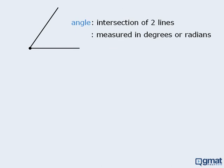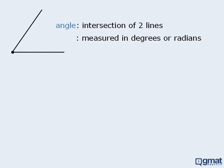Now let's talk about angles. Angles can be found at the intersections of two lines, and they are typically measured in degrees or radians.